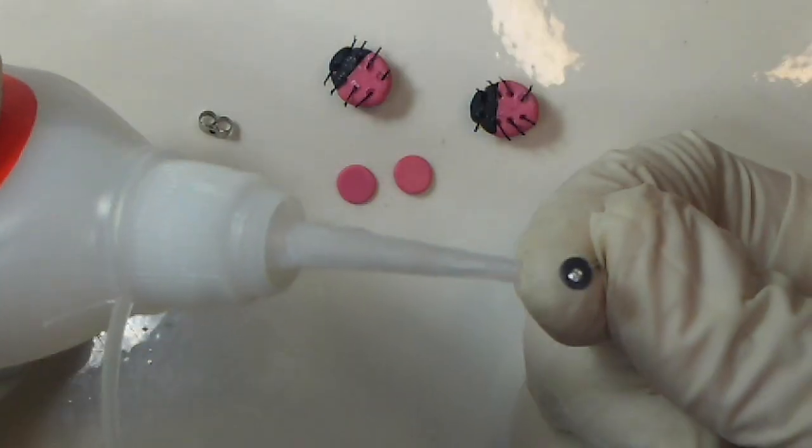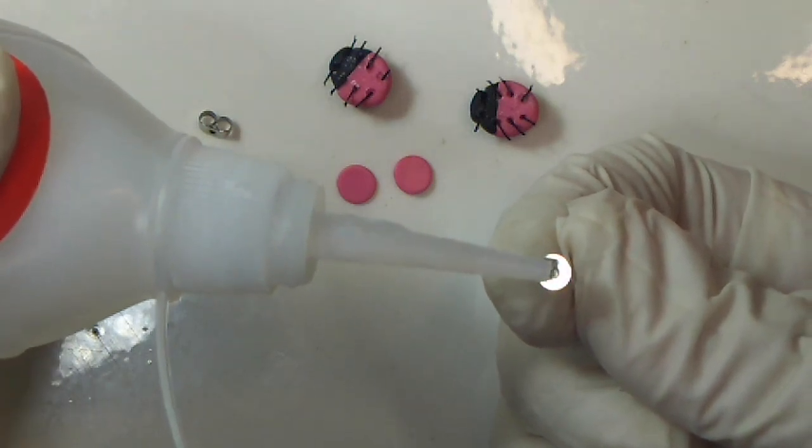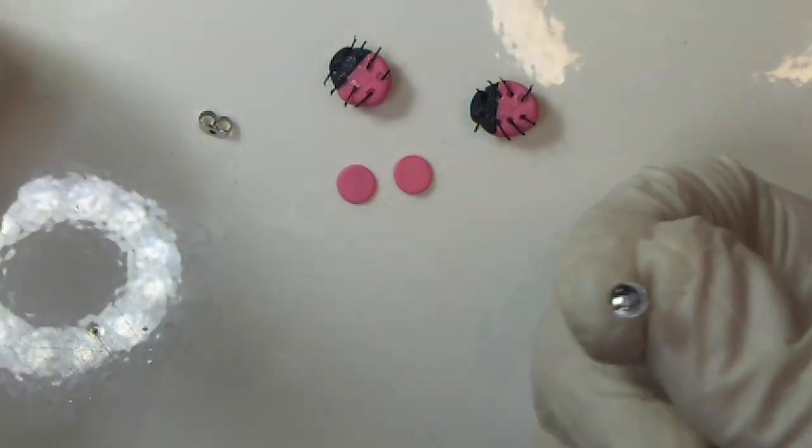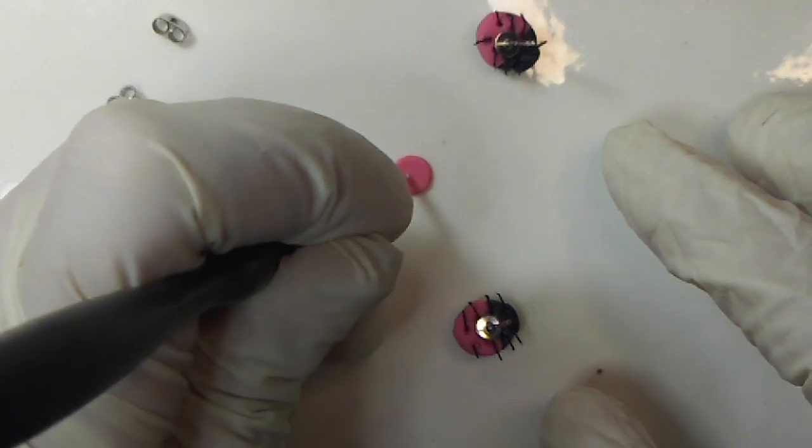A small dot of super glue helps to temporarily hold the earring back to the ladybug. You're actually going to be securing the back with the clay piece, but without the super glue, the metal piece kind of moves all around and it's harder to work with.